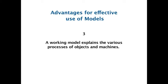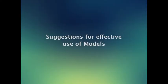3. A working model explains the various processes of objects and machines. The suggestions for effective use of models are: 1. Models should be large enough to be seen easily by everyone in the class. 2. Models may be supplemented with other teaching-learning materials like charts to help learners understand relationships. If it is a working model, a teacher should check it before use in class. 3. Learners should be allowed to touch the model and feel it for effective learning. True colors should be used in models for realistic learning, as it also makes the model more eye-catching.